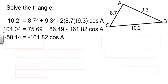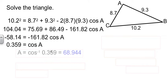So I subtracted the 75 and change, and I subtracted the 86 and change. Then divided by, next step, divide by the negative 161. Take the inverse cosine, and I find out angle A is almost 69 degrees. 68.944.